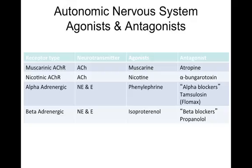If you gave someone a muscarinic agonist, that's like increasing their parasympathetic activity. So what would be a very extreme parasympathetic response around your body? Fainting — blood pressure and heart rate gets so low that you lose consciousness.